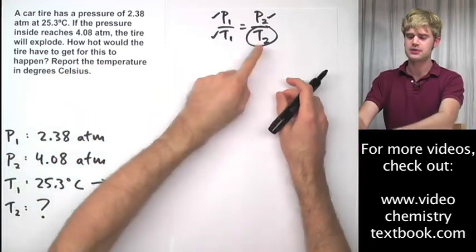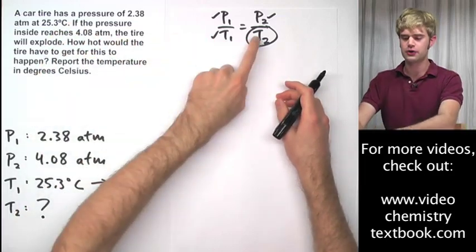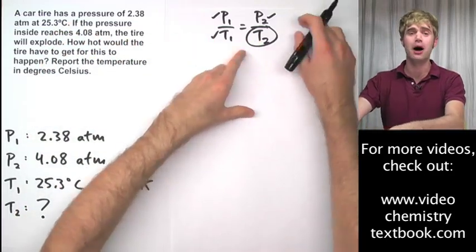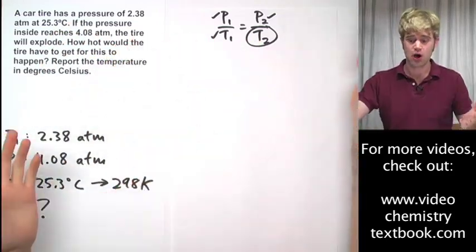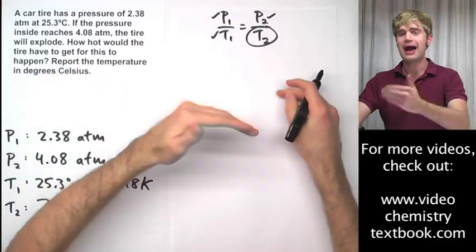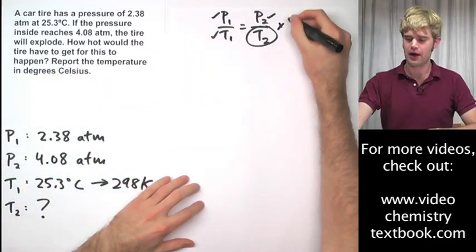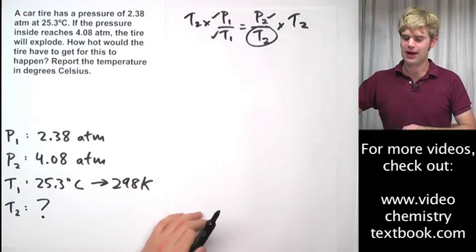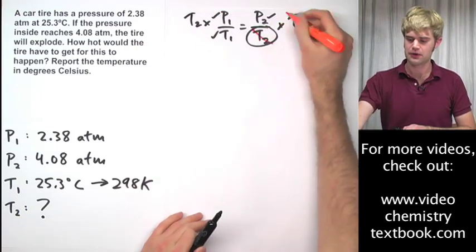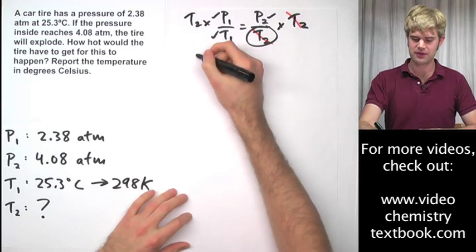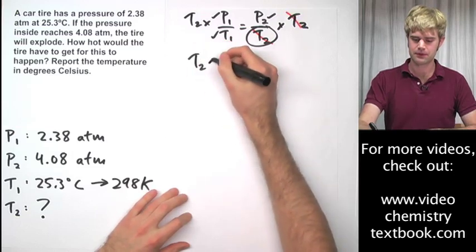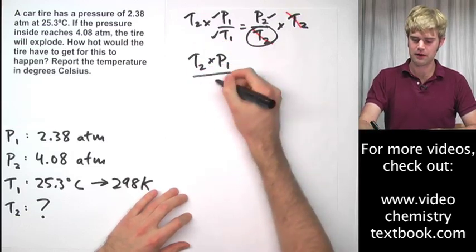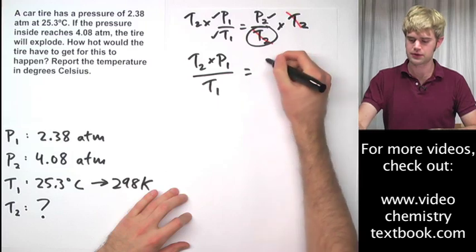So T2, first thing I want to do is I want to get it out of the bottom. I can't solve for it if it's in the bottom. So I'll get it out of the bottom by multiplying both sides by T2. So now it's on the bottom here, it's on the top here, so it cancels out and I can rewrite this as T2 times P1 divided by T1 equals P2.